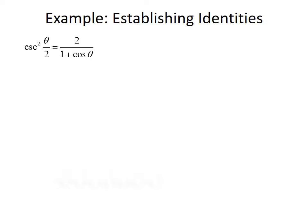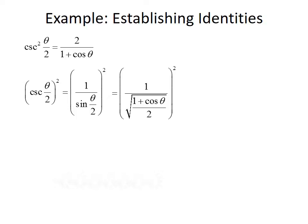The second identity: cosecant squared of theta over 2 equals 2 divided by 1 plus cosine theta. Starting with the left side, we write cosecant squared theta over 2 as the quantity cosecant of theta over 2, squared. Using the reciprocal identity, cosecant equals 1 over sine, so we have 1 over sine of theta over 2, squared. Applying the half angle formula for sine gives 1 over the square root of 1 minus cosine theta over 2, squared. Squaring cancels the square root, leaving 1 over 1 minus cosine theta over 2, whose reciprocal is 2 over 1 plus cosine theta. Identity established.